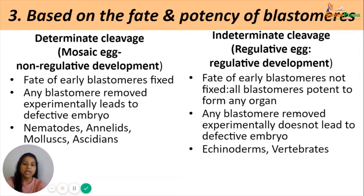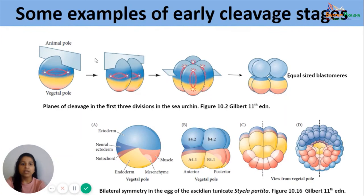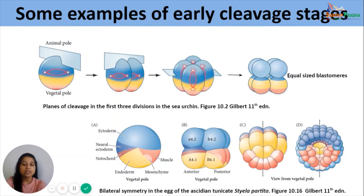Here we have examples of early cleavage stages in different animals. In sea urchin, the first two cleavages are meridional and perpendicular to each other, the third is equatorial, forming two tiers of equal blastomeres in radially symmetrical pattern around the polar axis. The lower diagram shows bilateral symmetry in the egg of the ascidian tunicate Styela partita, where the very first cleavage determines bilateral symmetry and all subsequent cleavages occur with respect to that first cleavage pattern.